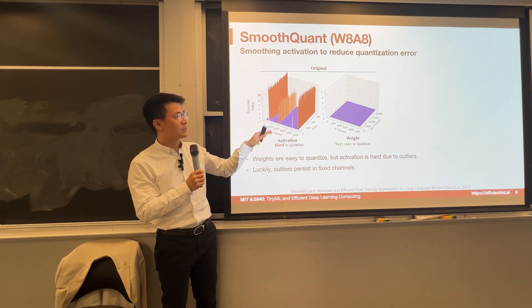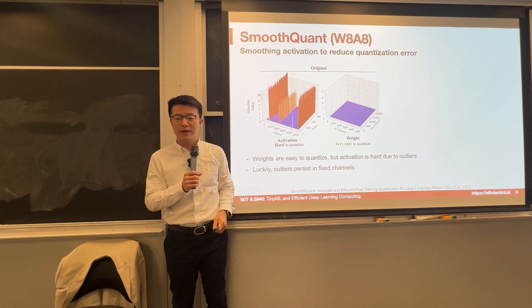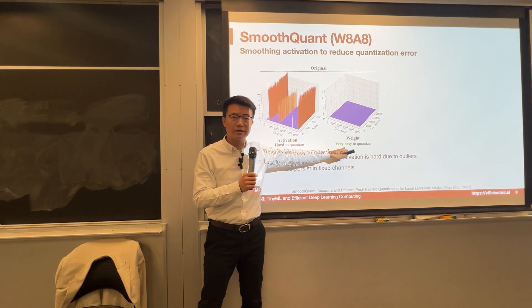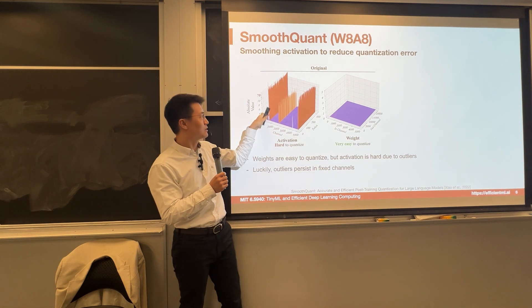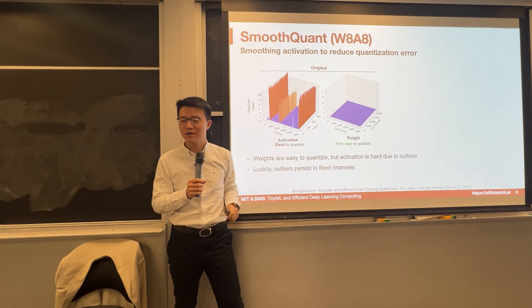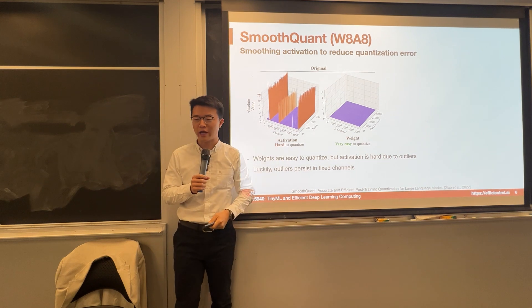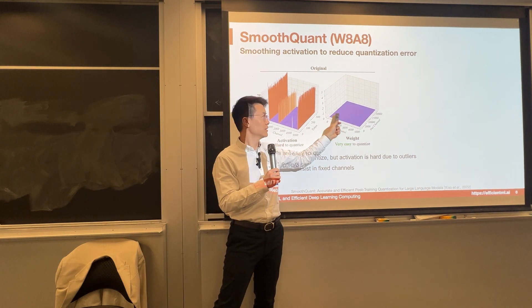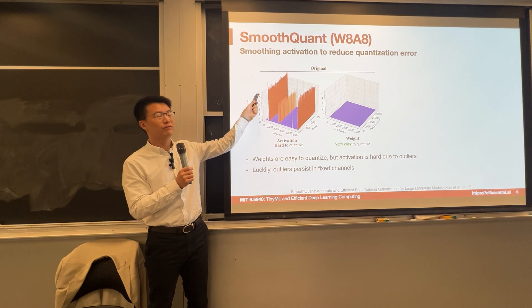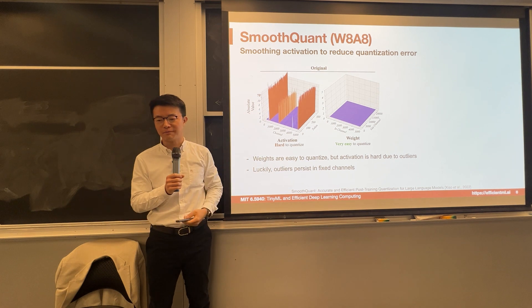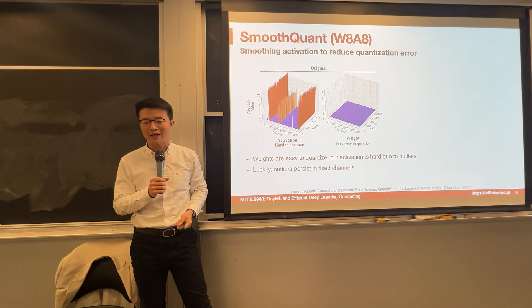What are the outliers? This shows the outliers in the activation versus the weight. Several channels have values much larger than the remaining channels — these three channels have values between zero and 70, even larger than 70. But the weight is pretty flat, with a range pretty small between zero and one. Such a large dynamic range makes the activation difficult to quantize, while the weights are really easy to quantize.